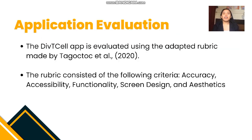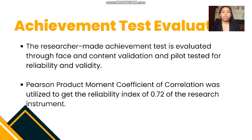The DVT Cell app was evaluated using an adapted rubric by Bolawan et al. in 2020. The adapted rubric was utilized by seven secondary high school teachers to evaluate the DVT Cell. The adapted rubric is composed of accessibility, functionality, screen design, and aesthetics as shown in Table 1. The researcher-made achievement test was subjected to thorough face and content validation by three college science professors, and the instrument was then pilot-tested for reliability and validity. The Pearson product-moment coefficient of correlation was utilized to get the reliability index of the research instrument, with an obtained value of 0.72, which means the research instrument is reliable and is good for classroom tests.